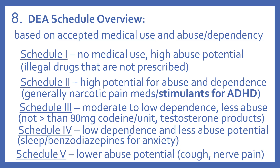Schedule 3 drugs have a moderate to low dependence and less abuse, and these include products with not greater than 90 milligrams of codeine per unit and the testosterone products.